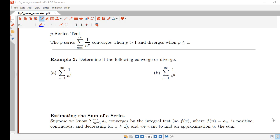The p-series test tells us that if we have something of this particular form, the sum from n equals 1 to infinity of 1 over n to the p, that is called a p-series. That series converges when p is greater than 1 and diverges when p is less than or equal to 1.